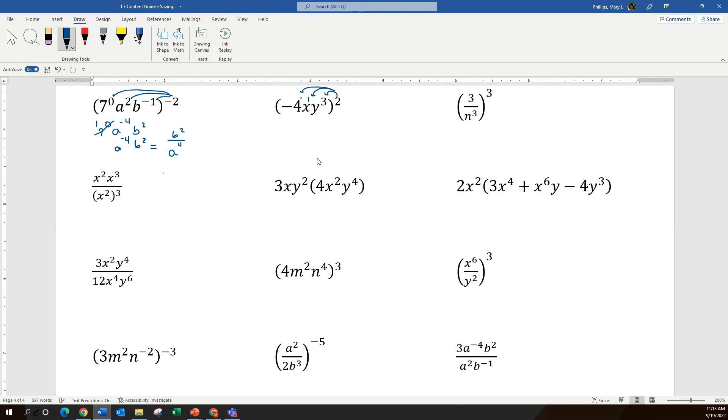When we do that, because of the parentheses, this is negative 4 that is getting squared because that negative is in the parentheses. Then multiplying I have x squared and multiplying again I have y to the 6. So negative 4 squared, if I need to put that in my calculator to see the value, then I do have to put the parentheses there and that is 16 x squared y to the 6.